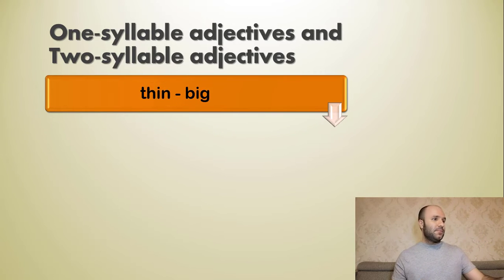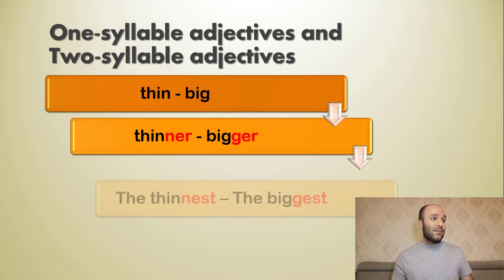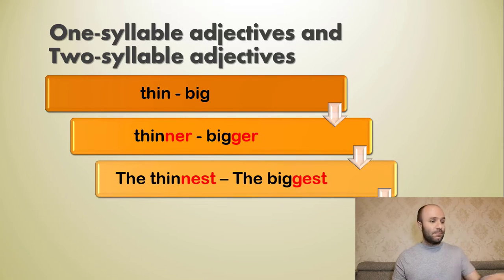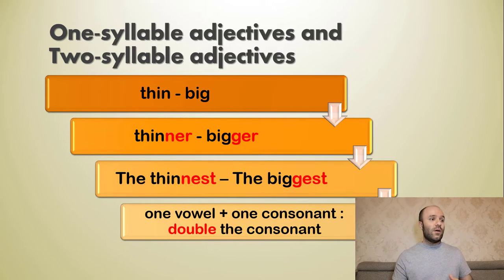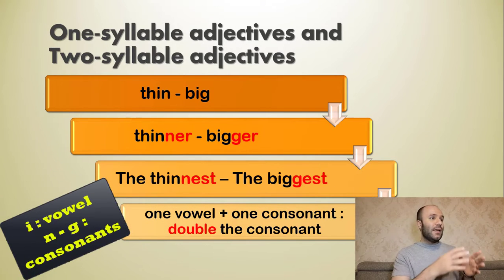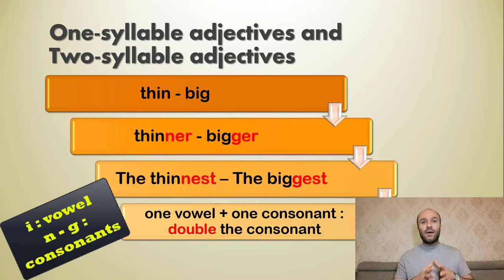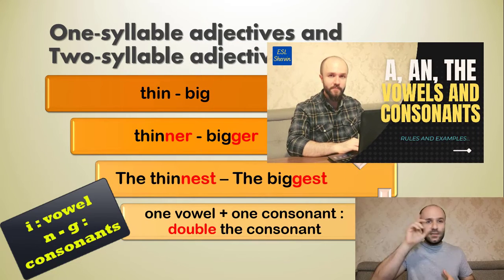For adjectives like 'thin' and 'big': the comparative is 'thinner' and 'bigger', and the superlative is 'the thinnest' and 'the biggest'. The rule is: one vowel plus one consonant — you double the final consonant. In 'thin', 'i' is a vowel and 'n' is a consonant; in 'big', 'i' is a vowel and 'g' is a consonant. If you don't know about consonants and vowels, I've put a link on screen — make sure to watch the related video.